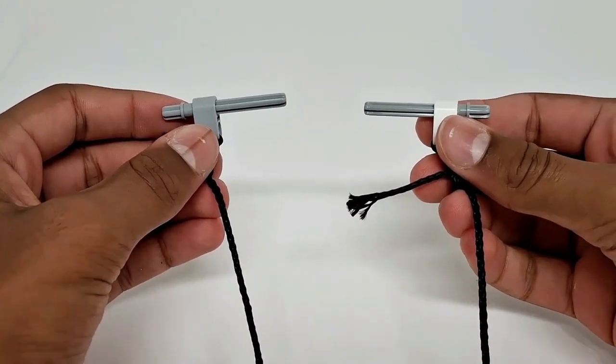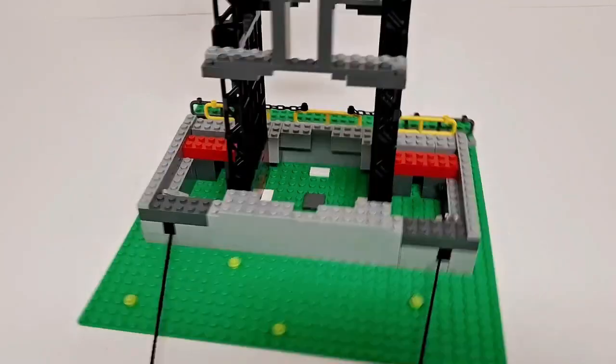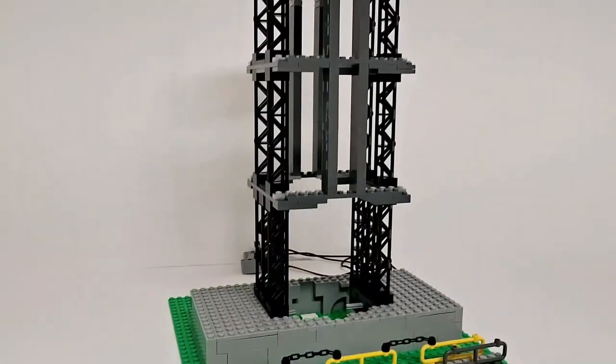And to release the rocket ship, I added these two pins that will block it from releasing itself until I pull this rope. Alright, now that we're done building the launch pad...